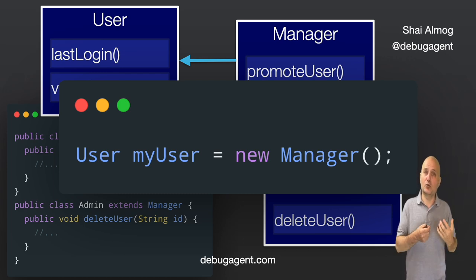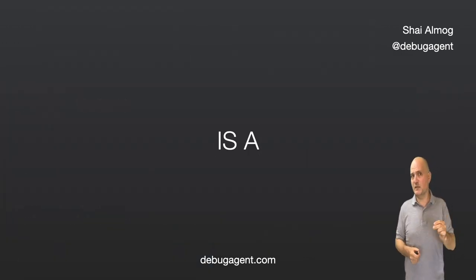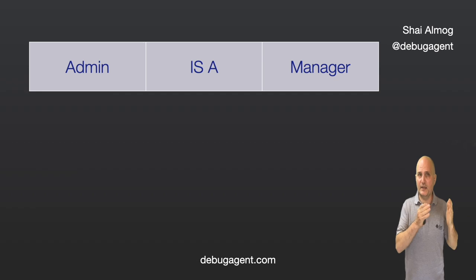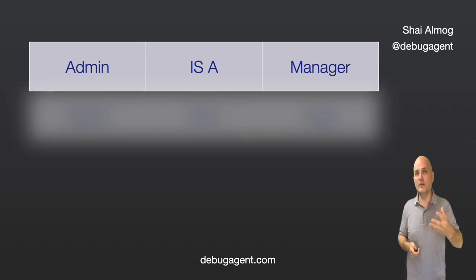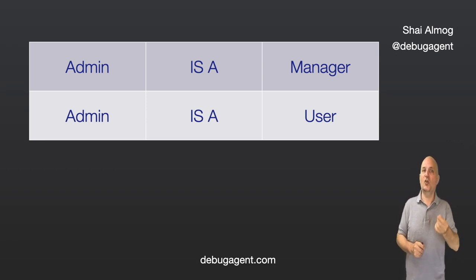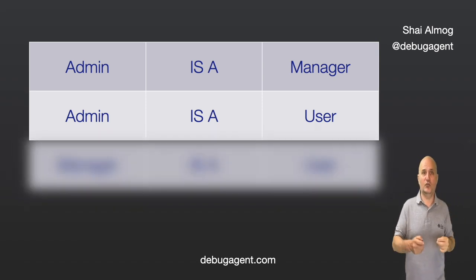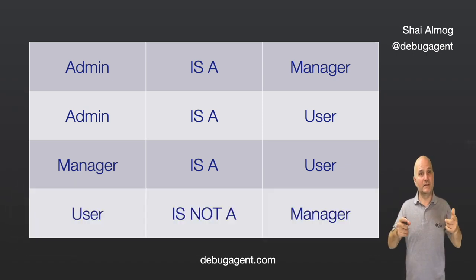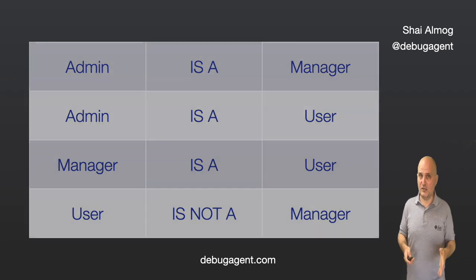In object-oriented programming there is a term for that: 'is-a'. It sounds a bit silly, but it helps us explain inheritance relations nicely. Admin is a manager — that means admin has the capabilities of manager. Admin is a user as well, because it inherited the manager class, which in turn inherited the user class. Manager is a user. But 'is-a' doesn't work both ways — a user is not a manager.